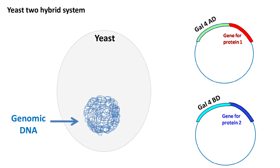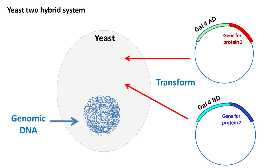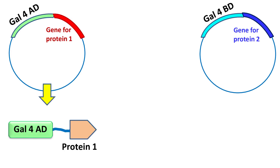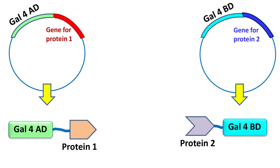Once ligation occurs, both plasmids are transformed into yeast cells. It should be noted that the yeast has the Gal4 AD and Gal4 BD genes deleted in its genome. Hence, Gal4 AD and Gal4 BD proteins will be made only by the plasmids that are transformed. Along with Gal4 AD protein there is protein 1, and along with Gal4 BD protein there is protein 2.